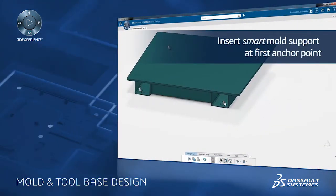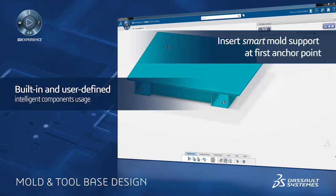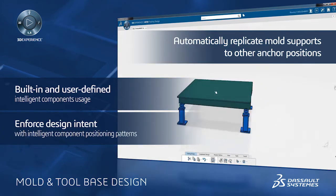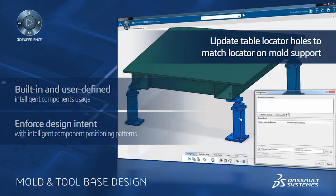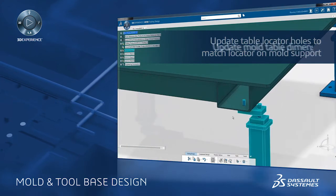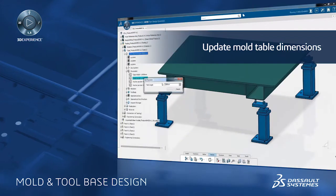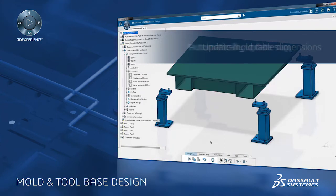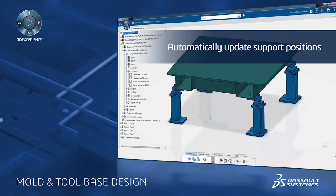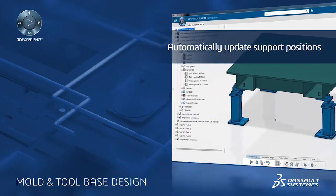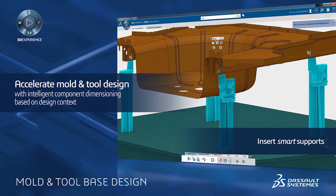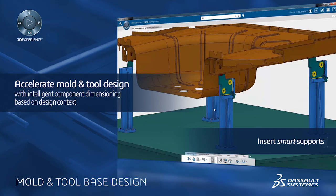These components can be added to your mold or tool in one step and have built-in and user-defined intelligent usage behaviors so that design intent can be expressed and enforced. Here we see components being placed with predefined positioning and orientation patterns to assure compliance with corporate best practices. Full associativity between these components and the main mold or tool design ensures that any changes to the layout will result in the components being automatically repositioned and reoriented accordingly.